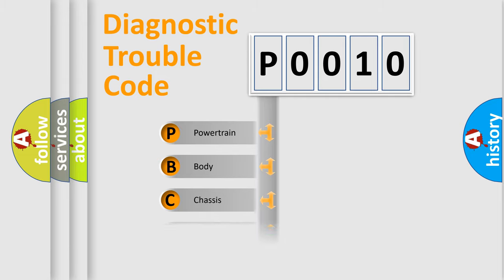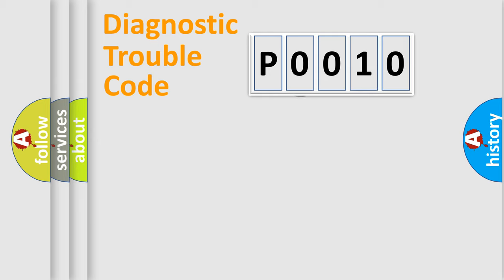We divide the electric system of the automobile into four basic units: Powertrain, Body, Chassis, and Network. This distribution is defined in the first character code.